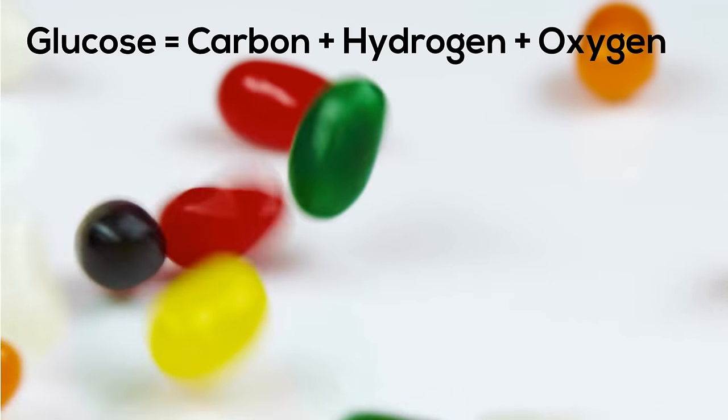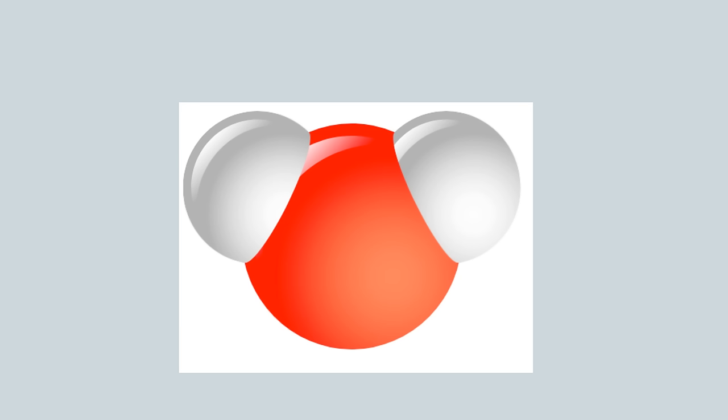When elements create a compound, they always join in a specific ratio. The ratio of water is 2 hydrogen to 1 oxygen. If a compound has a different ratio of hydrogen to oxygen, then it is not water.